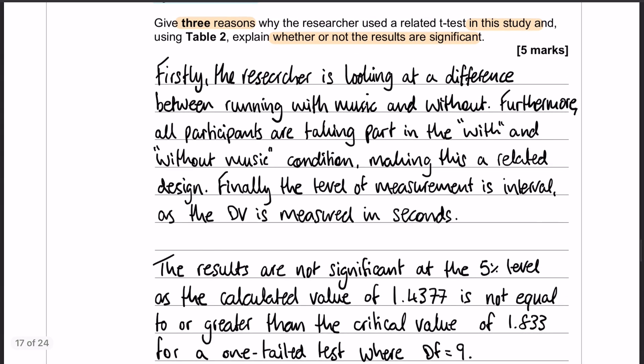So three reasons, and remember we have to apply all the way. We have a test of difference, and what is that difference? It is the difference between running with music and running without music, so we have two conditions. What else? We have all the participants taking part in both of the conditions, which means that it is a related design, a repeated measures design which makes it a related design. And then finally, we have the level of measurement is interval because the DV is being measured in seconds.